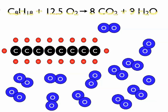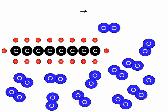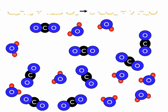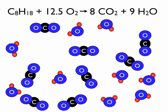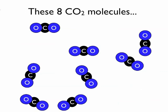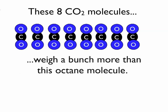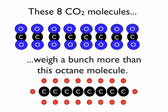And when you have that combustion reaction, you recombine things, and it looks something like this. You get from our initial octane molecule with 12.5 oxygen molecules, you end up with 8 carbon dioxide molecules and 9 water molecules. And if we think about those 8 carbon dioxide molecules, they end up weighing a bunch more than this octane molecule, which is the way it looks in the representation, because that's the way it is.